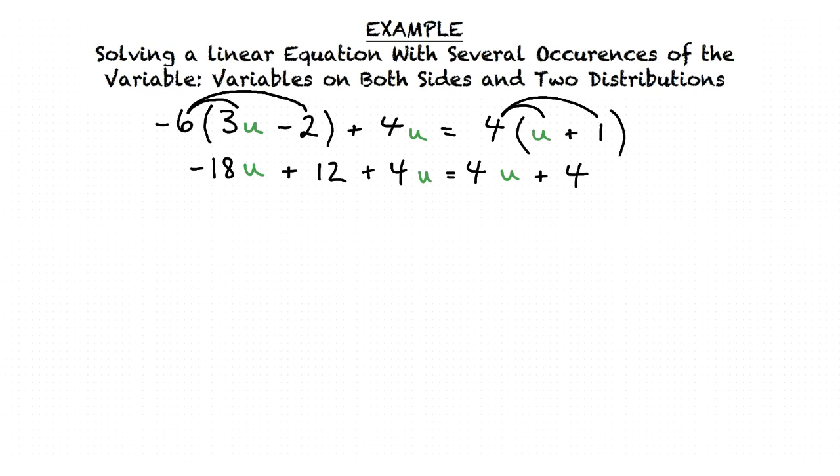Now we have successfully used the distributive property to distribute where possible. Our next step will be to combine like terms. We can see on the left hand side of our equation that we have two values containing the variable u. These are like terms.